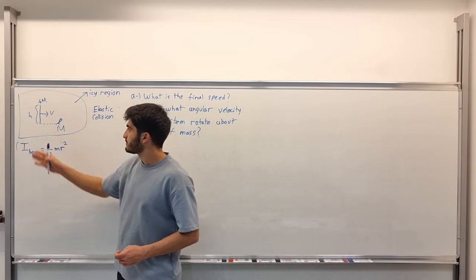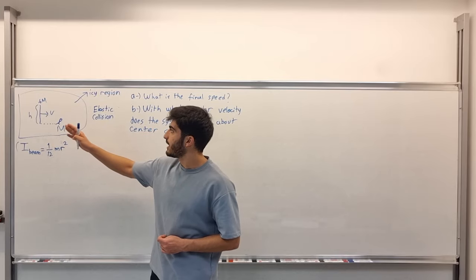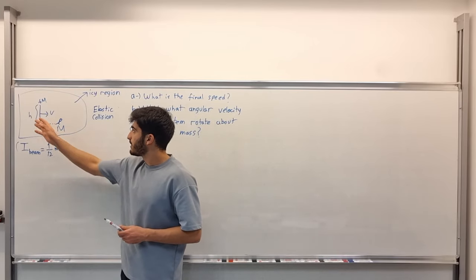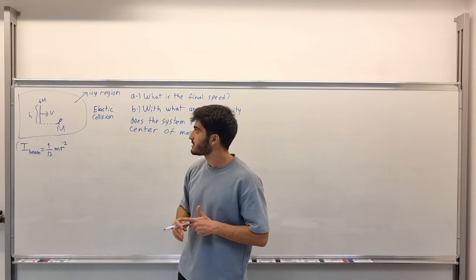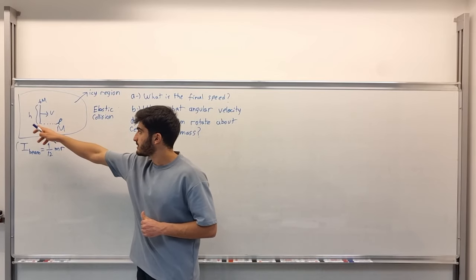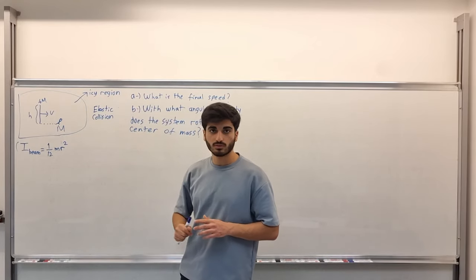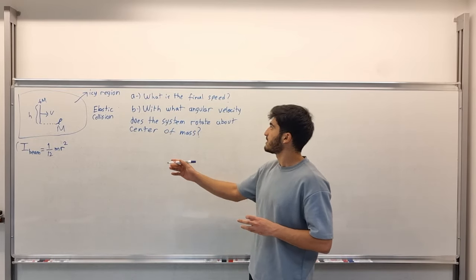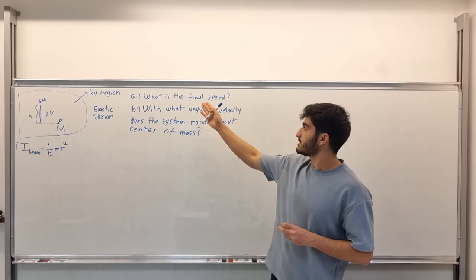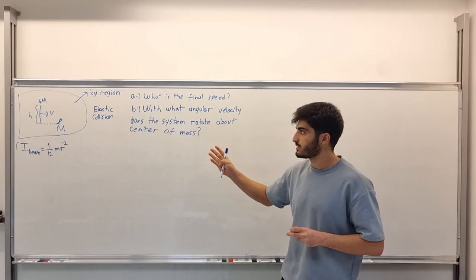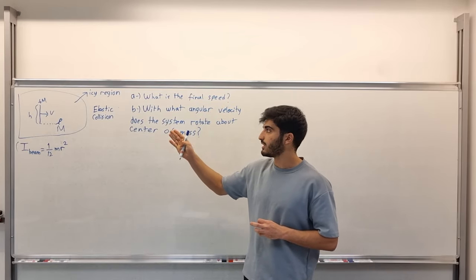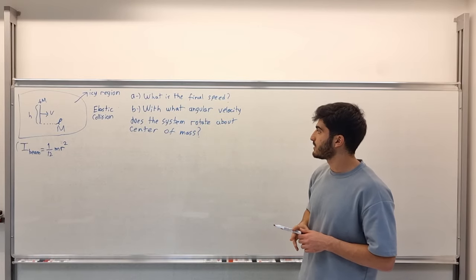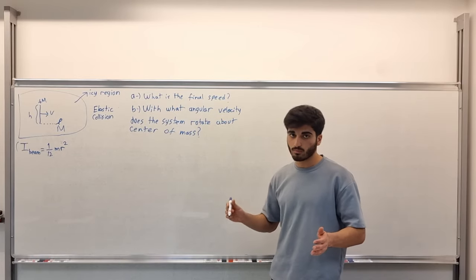There is a beam with a length of h and the mass of 4m, and it slides with velocity v in the ice region. At the end there is a man with the mass of m. The question asks us: what is the final speed of this system with the man and the beam, and in part b, with what angular velocity does the system rotate about the center of mass?